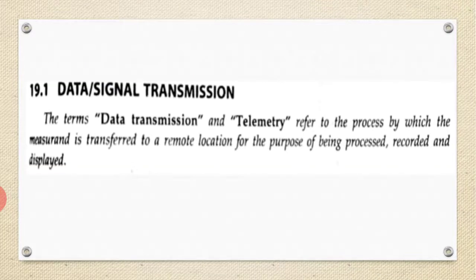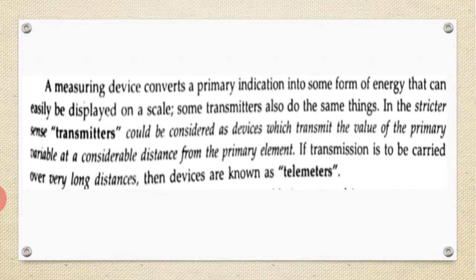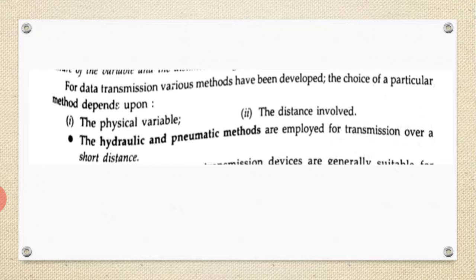Let us first define the term data transmission and telemetry. These two refer to the process by which the measurement is transferred to a remote location for the purpose of being processed, recorded, and displayed. A transmitter is a device which transmits the value of a primary variable at a considerable distance from the primary element where it is sensed. If transmission is to be carried over a very long distance, then devices are known as telemetry.